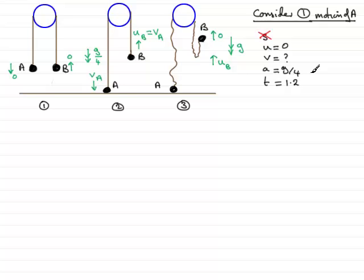So we can put all of this together and select an appropriate formula that leaves S out. And that would be V equals U plus AT. So the final velocity VA equals U. Well, U is zero, so we can leave that out. And so it's just going to be A times T. So that's going to be a quarter G or G over 4 multiplied by 1.2. And if you work that out, what you get is 0.3G. I've left the G in because I think you'll find that leaving the G in will make this problem fairly easy.